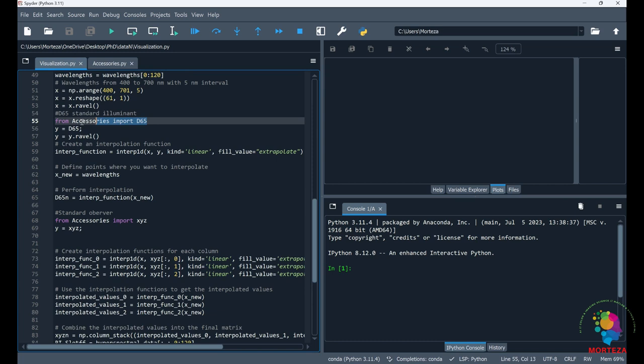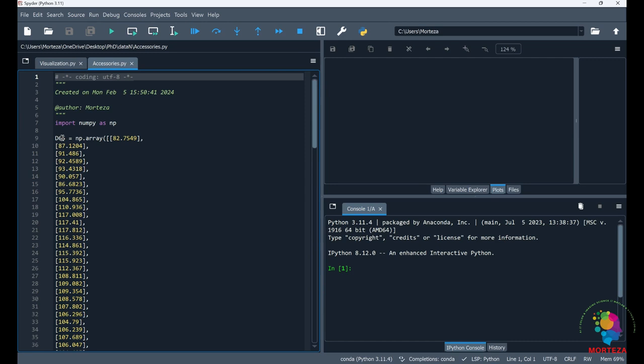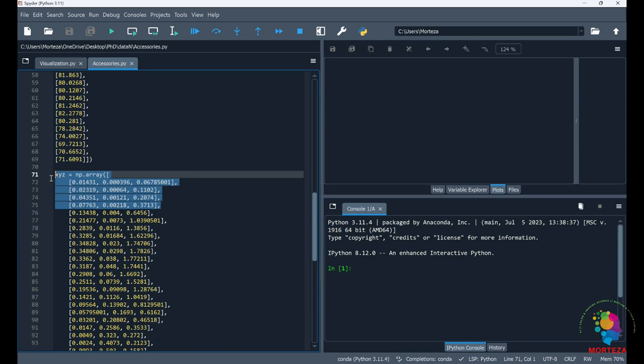And then here, I'm going to be accessing the D65 standard illuminant data from the file called accessories, which is here. This file is saved in the same folder as the rest of the coding. And this is the D65 standard illuminant data. And then I also have the color matching function of the standard observer.